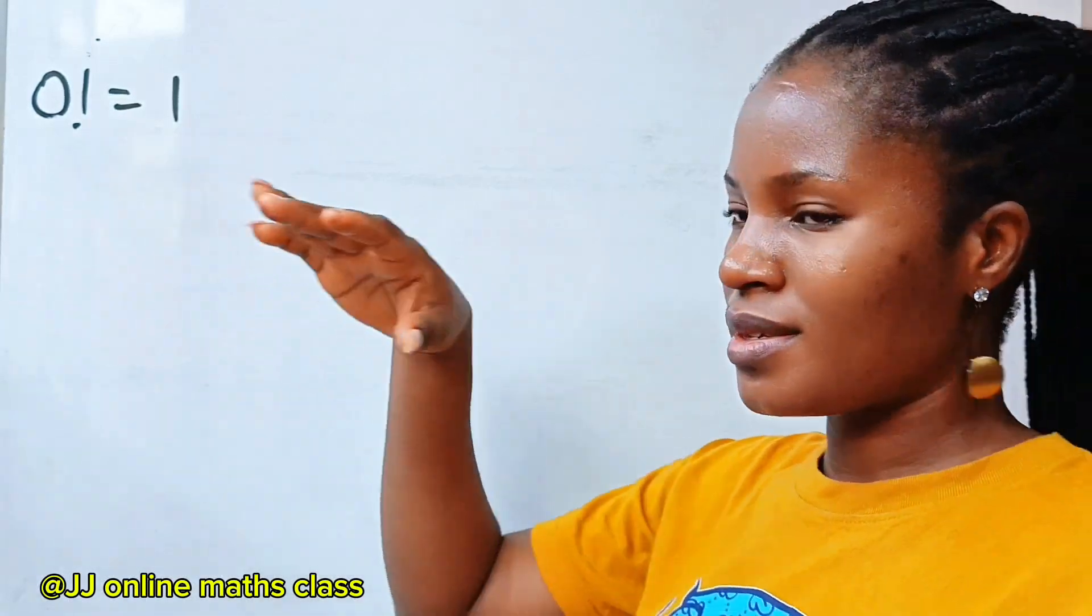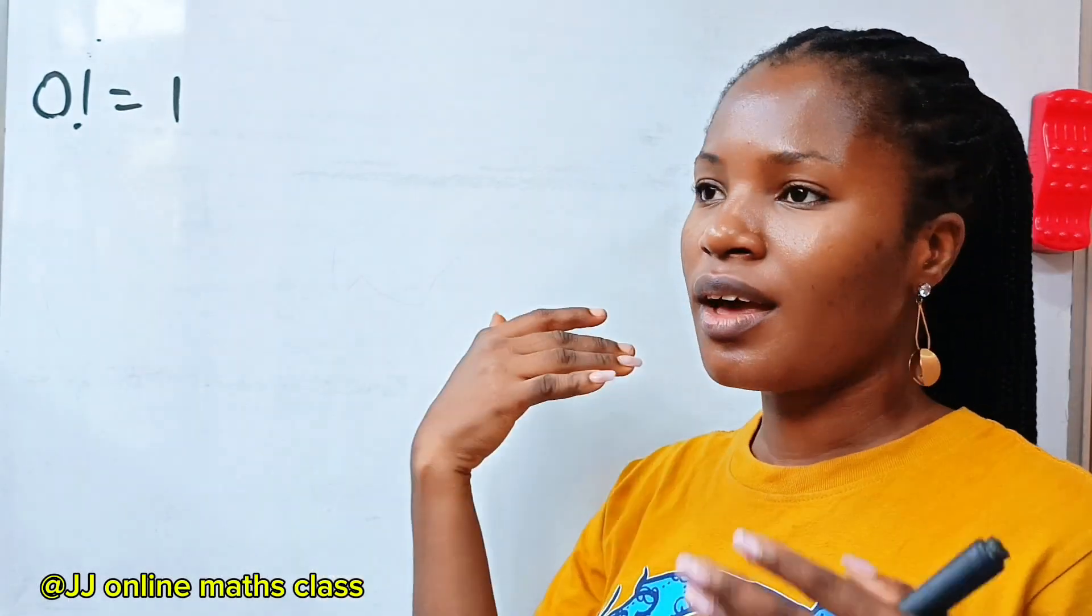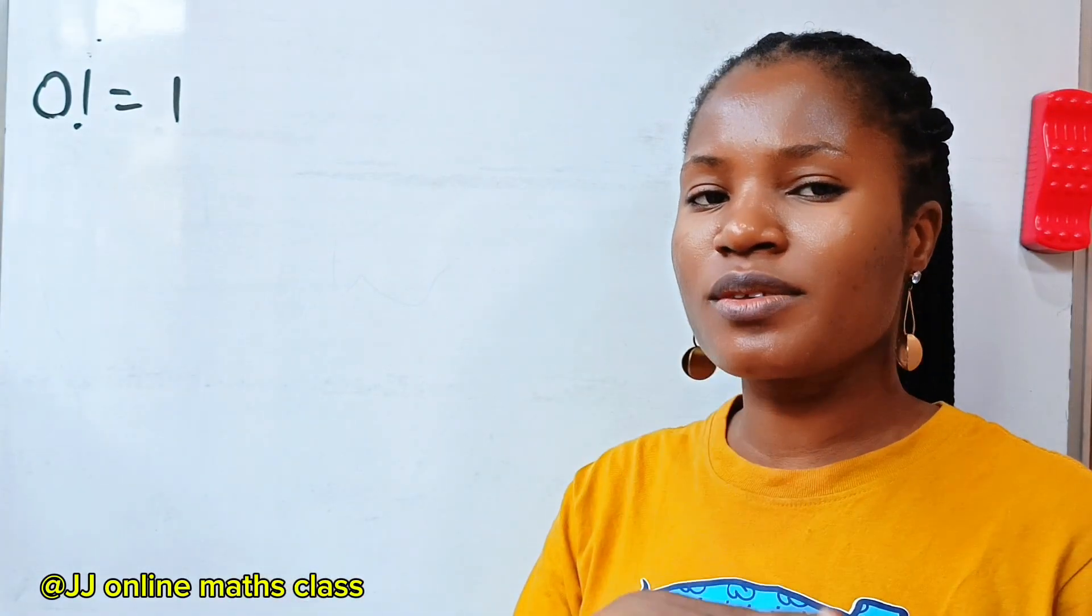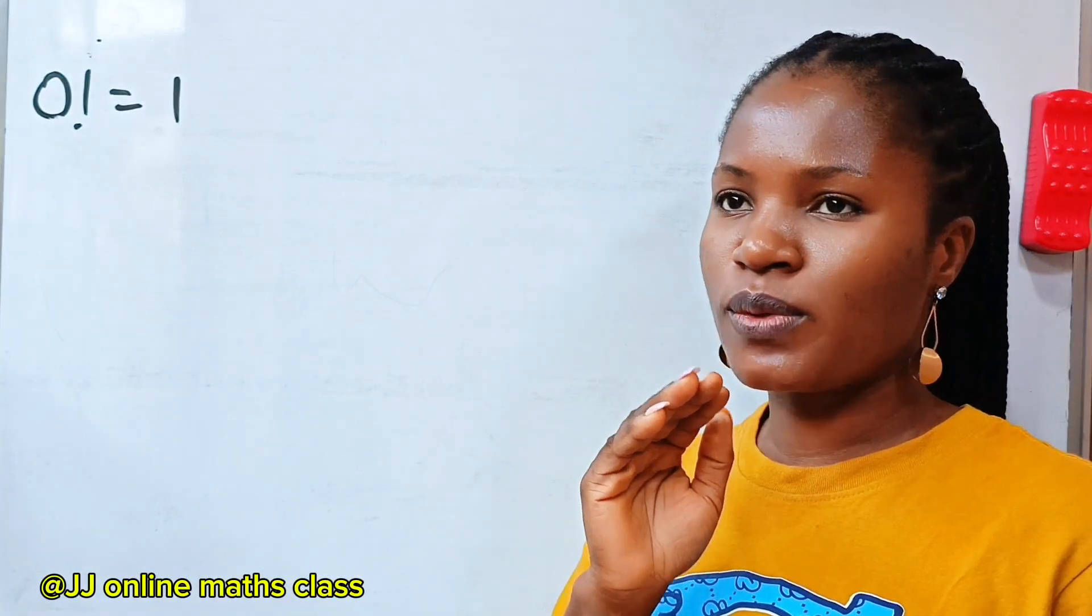I'm going to prove three ways in three methods why 0 factorial is equal to 1. So let me give you three reasons why 0 factorial is equal to 1.